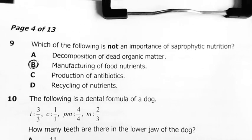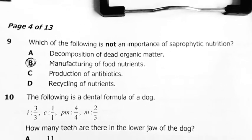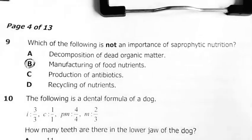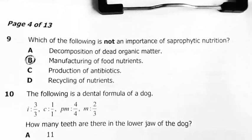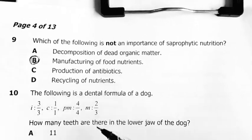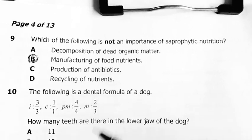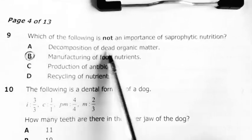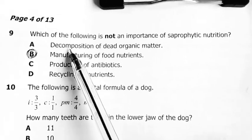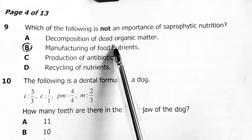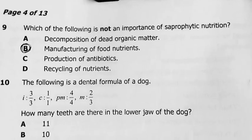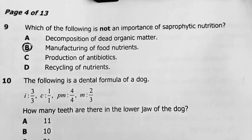Question 9. Which of the following is not an importance of saprophytic nutrition? You should understand what saprophytic nutrition is and the types of organisms that carry out saprophytic nutrition. I would say fungi are the organisms that carry out saprophytic nutrition. First one, decomposition of dead matter, yes. Which one is not an importance? So saprophytic nutrition includes this. Fungi breakdown dead organic matter. B was my answer. Manufacture food, no.